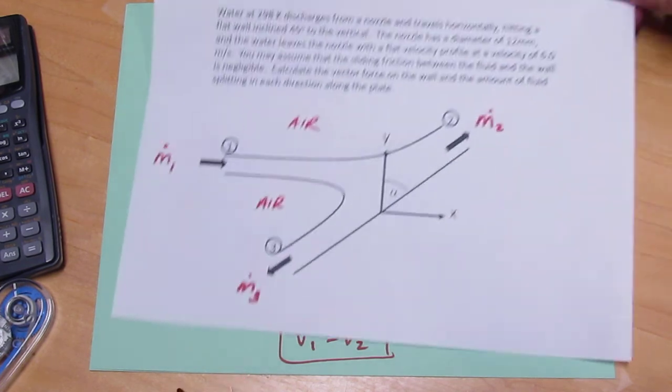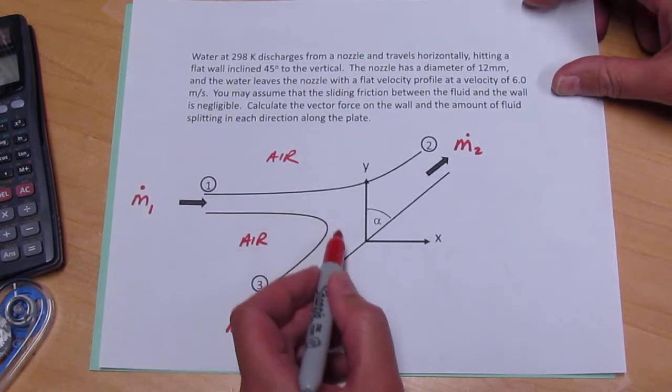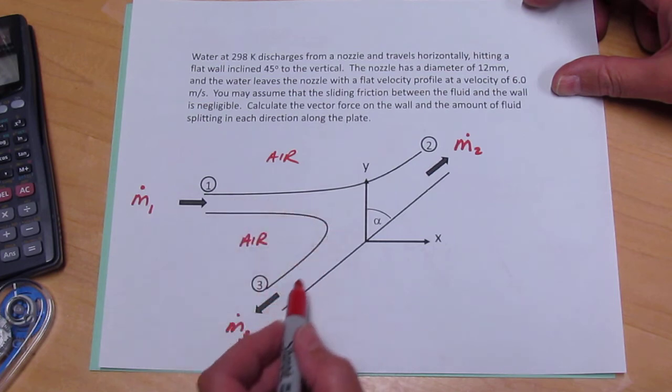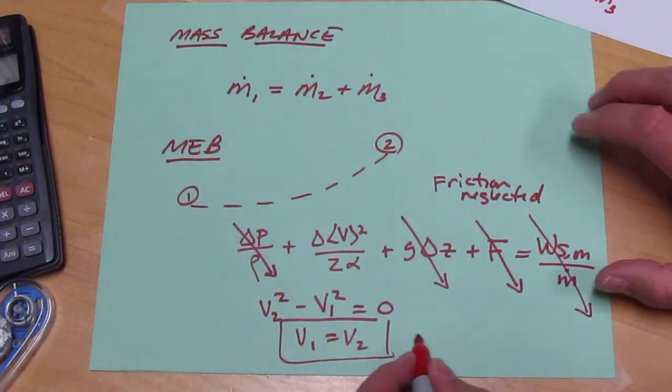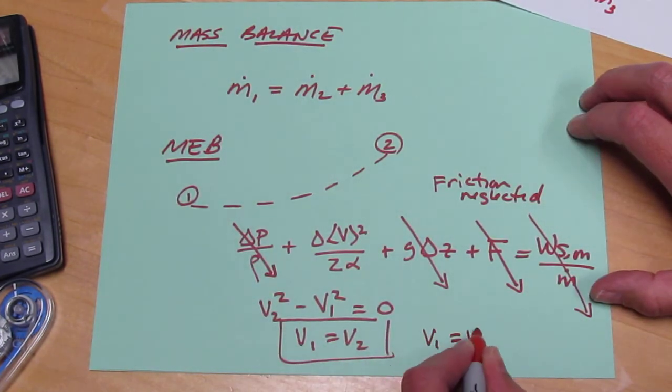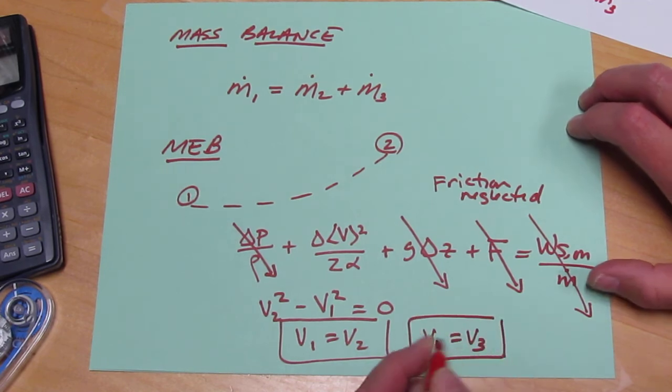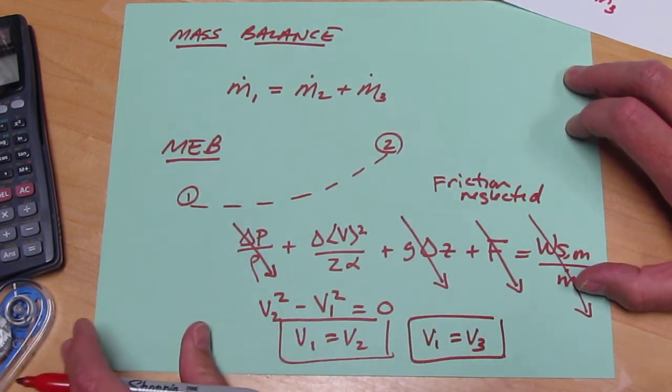We can write a similar mechanical energy balance along a streamline that goes from one to three, and the conclusion will be that V1 is equal to V3. So we end up with the conclusion that the velocity is constant.